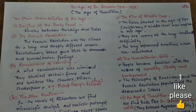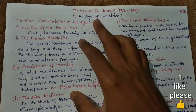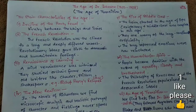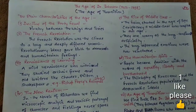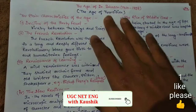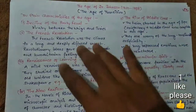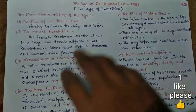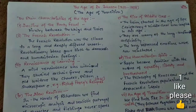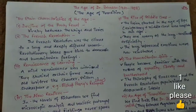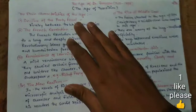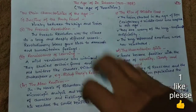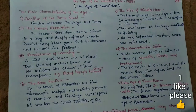This age is also called the Age of Transition. The Age of Transition is one of two ages — a time in which we get to see the qualities of the age. Let's talk about the main characteristics of the age.